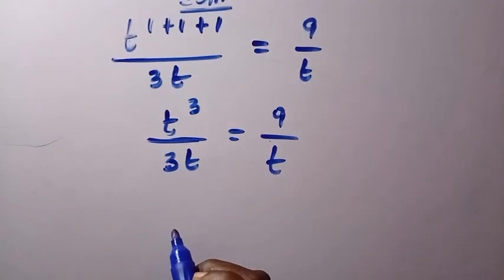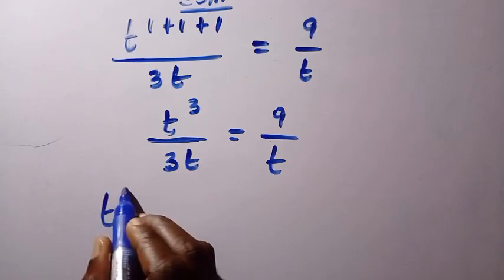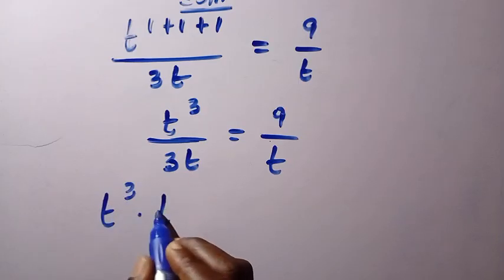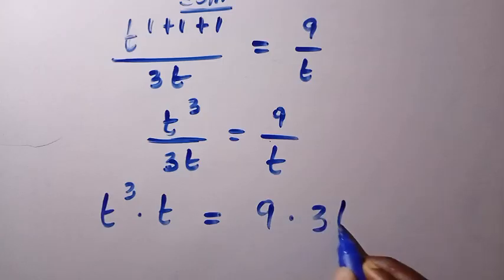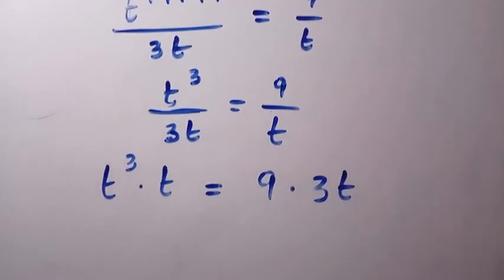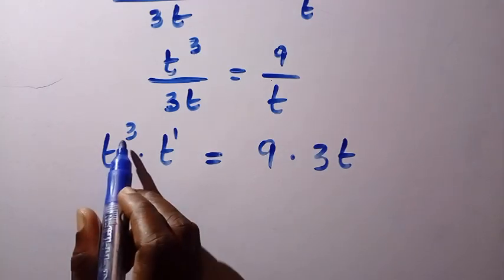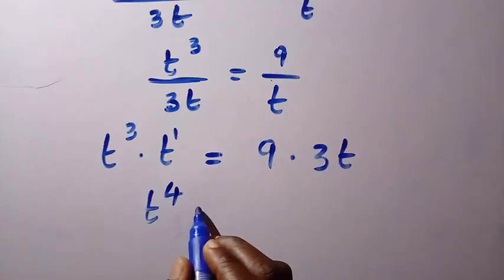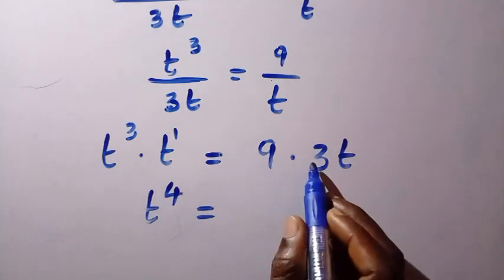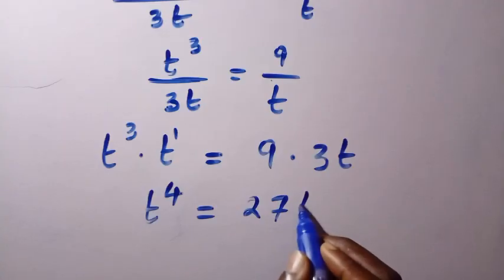After this, let's cross-multiply. By cross-multiplying, we have t raised to the power of 3 multiplied by t equals 9 multiplied by 3t. Since this t is t to the power of 1, t raised to the power of 3 multiplied by t raised to the power of 1 gives us t raised to the power of 4 equals 9 multiplied by 3t, which is 27t.